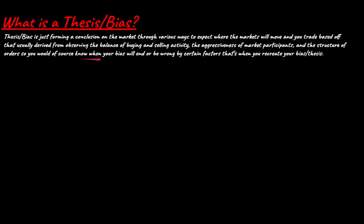You obviously want to know when your bias will end or be wrong — that's when you recreate your bias. For example, if your main objective was price filling a single print on TPO and it's already been filled, you need to create a new thesis. You can't keep saying 'I want longs' when the single print at the top is already filled. You need to look at where price has been and focus on current business using AMT logic.